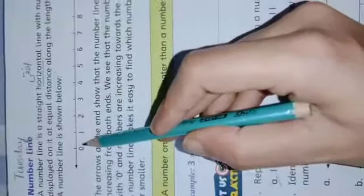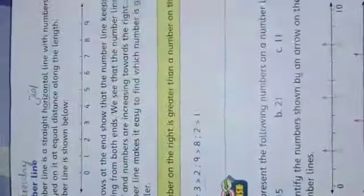We see that the number line starts with zero, and numbers are increasing towards the right. Numbers increase on the right side - zero, one, two, three, the numbers keep growing.